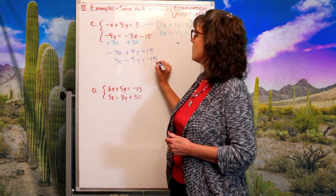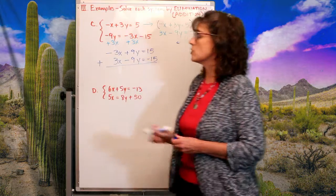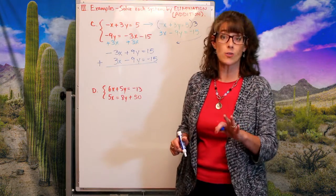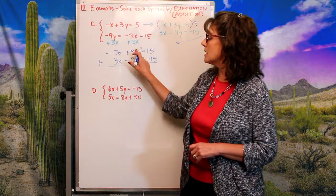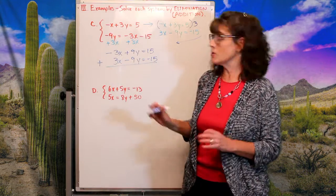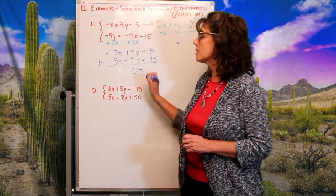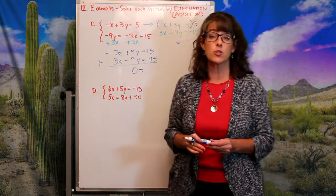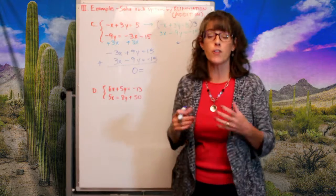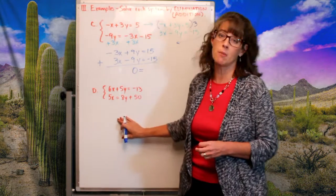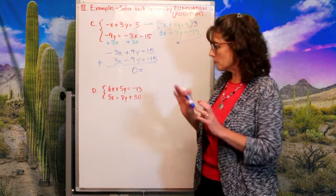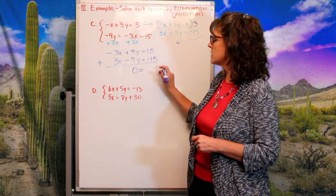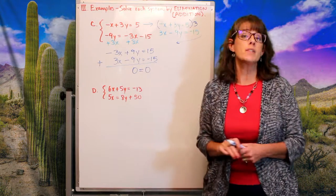Now I have opposite coefficients and I'm ready to add. Negative 3x plus 3x cancels to zero; 9y minus 9y cancels to zero. Don't think that every time you multiply by a factor, all the variables will wipe out — you'll see that's not always the case. But it did happen this time.